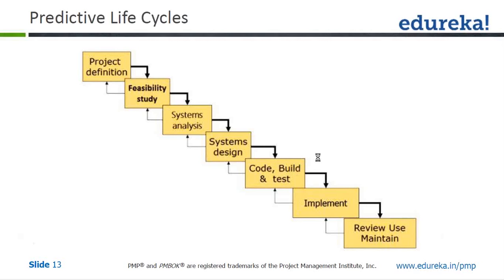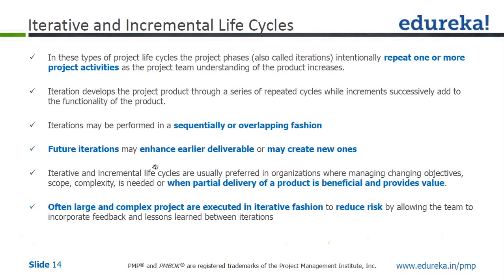In iterative and incremental project life cycles, the project phases — also called iterations — intentionally repeat one or more project activities as the project team's understanding of the product increases. Iteration develops the project product through a series of repeated cycles, while increments successively add to the functionality of the product. Iterations may be performed in a sequential or overlapping fashion.